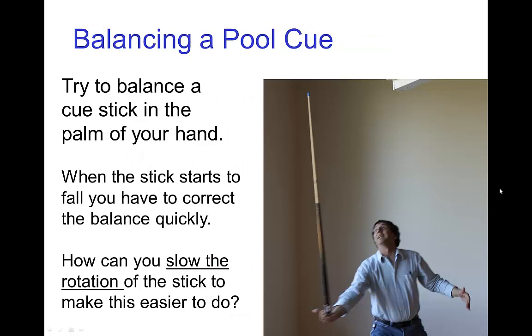One way to demonstrate that something that has its center of gravity high up off the ground takes a long time to turn and to tip over is to try this demonstration: try to balance a cue stick in the palm of your hand. It's rather difficult to do, you have to quickly correct because it's almost constantly out of balance.